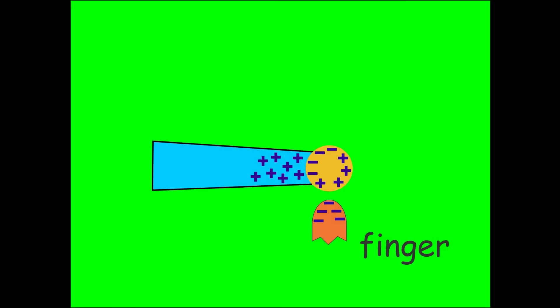The negative charge on my finger will cause a rearrangement of the induced charge on the ball. My finger will induce a positive charge next to it on the ball. The ball is then attracted towards my finger.